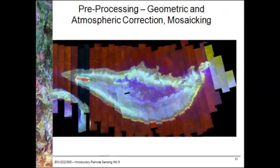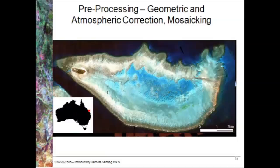Part of pre-processing may also involve mosaicing a number of image strips or squares together. This example of Heron Reef shows a number of image strips taken through individual flight lines of the aircraft. You can see they don't line up perfectly and there's some brightness variation between each strip. Through the process of pre-processing, we get rid of a lot of the distortions to produce an image that looks much better and is much better for extracting information about individual features.